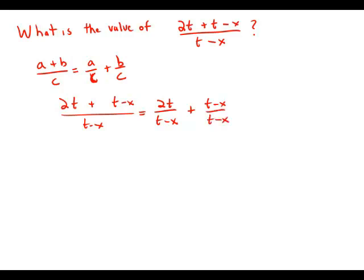And of course, t minus x over t minus x, anything over itself, is 1. So really, this whole fraction simplifies to 2t over t minus x plus 1.